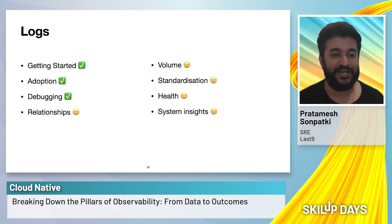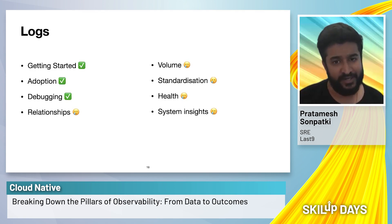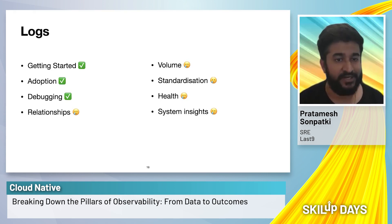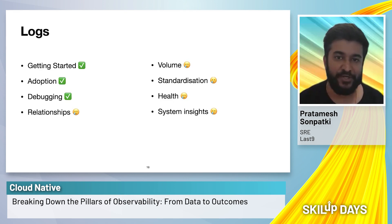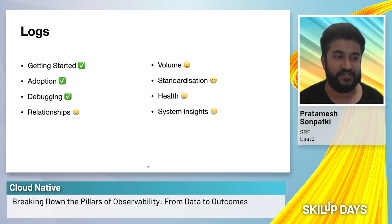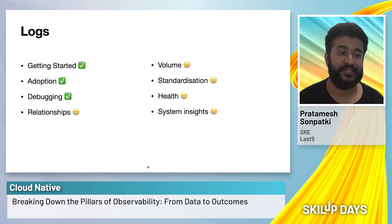Logs also don't have relationships. In a cloud-native environment with microservices, one service calling another is not visible inside logs because that data is disconnected. You have two separate sources of data to figure out how a request is flowing through different services. These are some of the challenges and problems associated with logs.